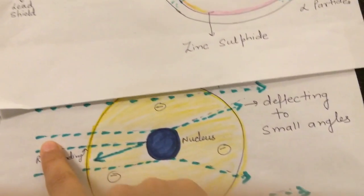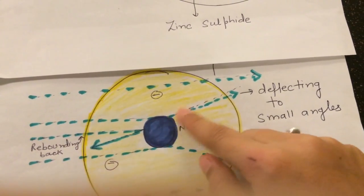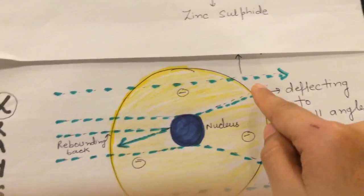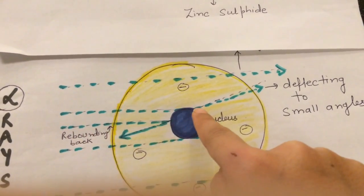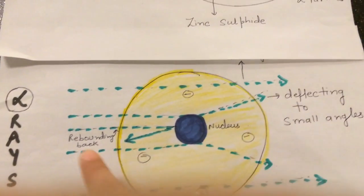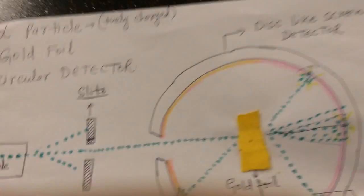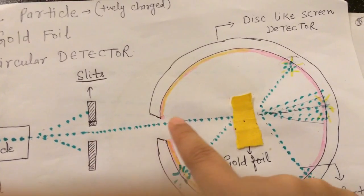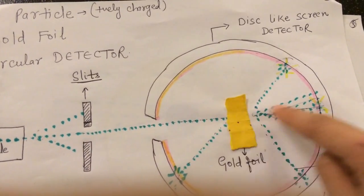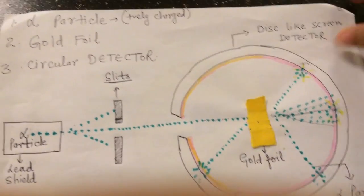The second observation was that some alpha particles did not pass straight — they showed some deflection from their original path. They were repelled and deflected through small angles. You can see in the diagram that when these alpha particles strike the gold foil, they don't pass straight but show deflection through small angles.